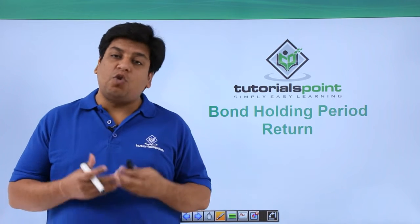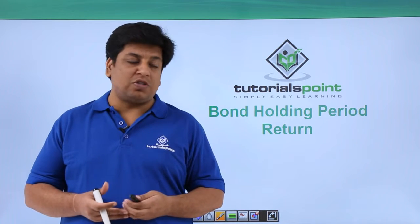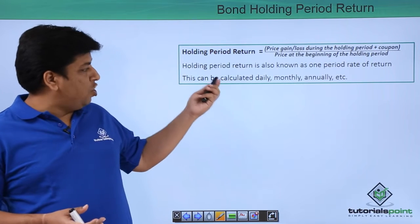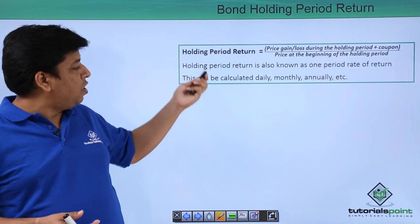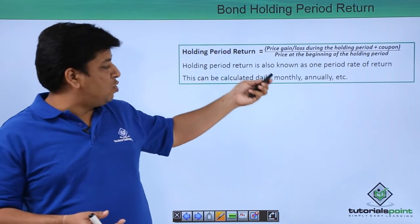What do we mean by holding period return in a bond? This is the formula we'll be using, but before we go to the formula, let's understand. Holding period return is also known as one period rate of return.